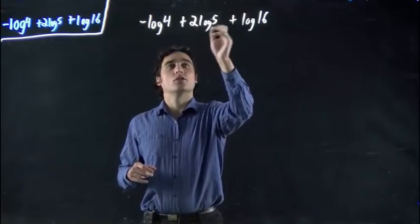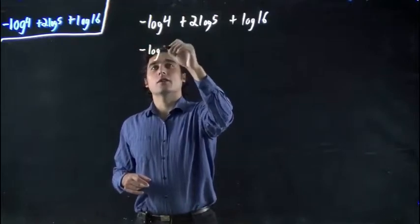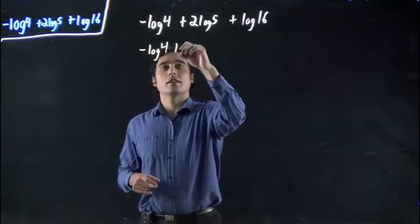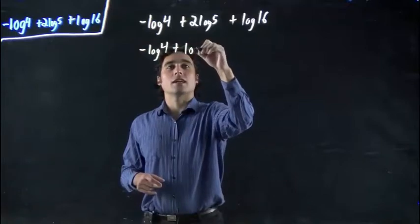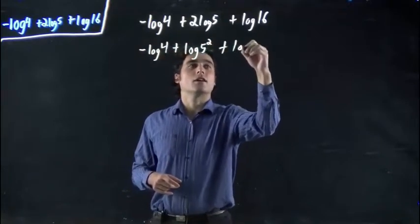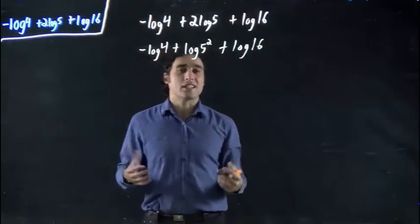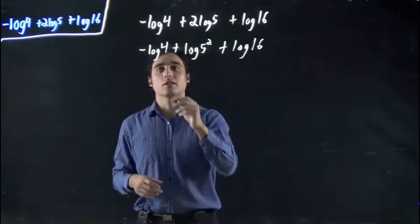We're going to get rid of this 2. 2 log 5. Remember, we can use the power rule kind of in reverse of how we originally looked at it. Because I can bring this up and write it as log 5 squared plus log 16. Because we want them all to be the same, no weird factors in front.